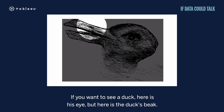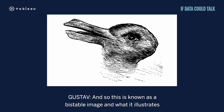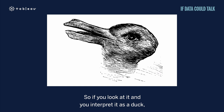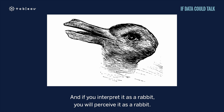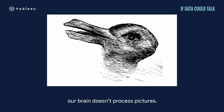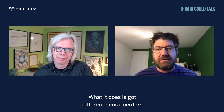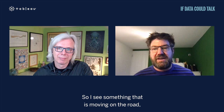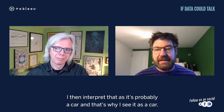This is known as a bistable image, and it illustrates that the data doesn't change — it's exactly the same image — but the way you perceive the world depends on how your brain interprets the information. Although our eyes take pictures, our brain doesn't process pictures. Instead, different neural centers encode different properties: movement, shape, color, positioning. Seeing something moving on the road is interpreted as 'probably a car.' Seeing really happens inside the brain through inference.